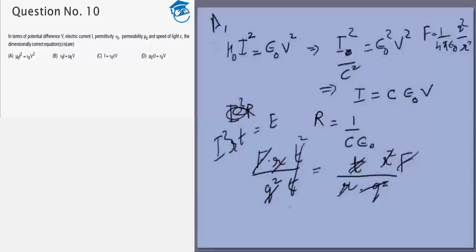If option A is correct, option B has to be wrong because we know that V and I don't have the same dimensions. Let's look at options C and D. So let's try to start with option C.